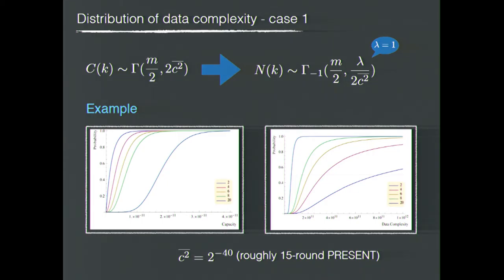Here is an example of how this distribution looks. We take the average linear potential as 2^{-40}, which is roughly about 15 rounds of the PRESENT block cipher. We also take different dimensions from 2 up to 20. The left plot shows the capacity distribution and the right one shows the data complexity.